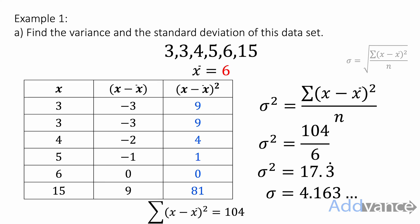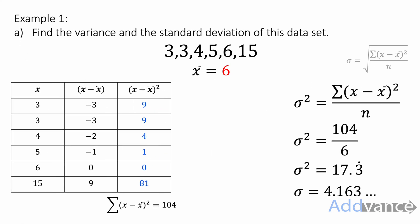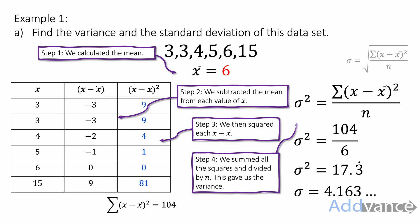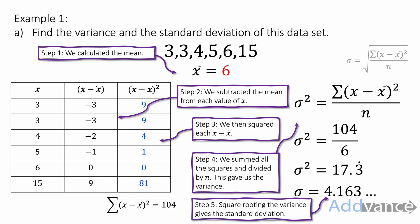Let's just go over that one more time. What we did: first we calculated the mean. Then we subtracted the mean from each value of x and wrote this in a table. We then squared each value of (x minus the mean). Step 4: we summed all the squares and divided by n — this gave us the variance. And finally, to find the standard deviation, we just take the square root of the variance, and we're done.